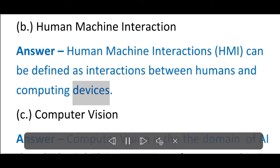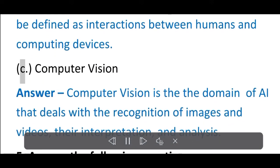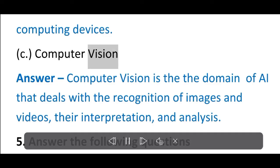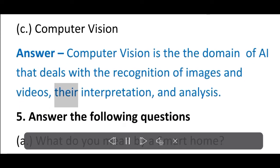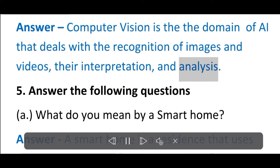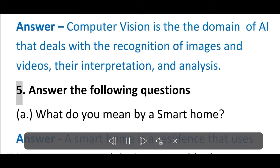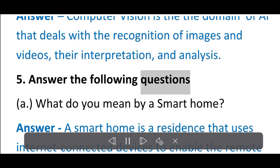C. Computer vision. Answer: Computer vision is the domain of AI that deals with the recognition of images and videos, their interpretation, and analysis. 5. Answer the following questions. A. What do you mean by a smart home?